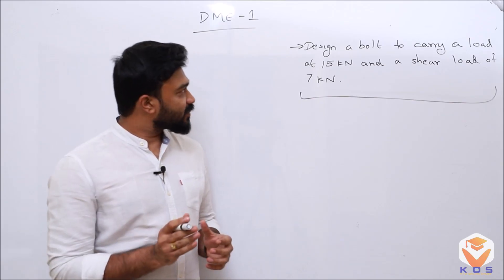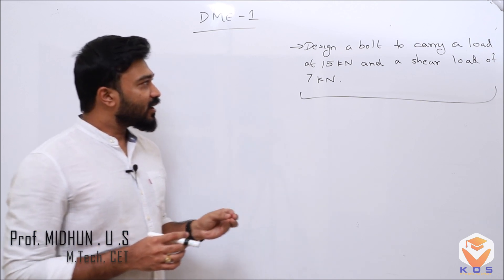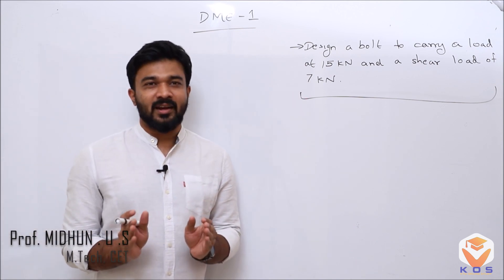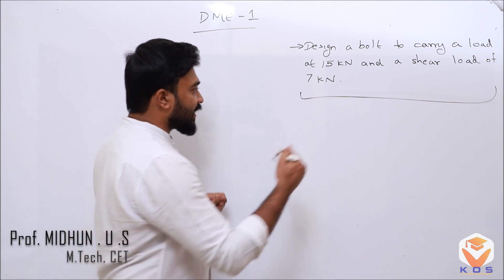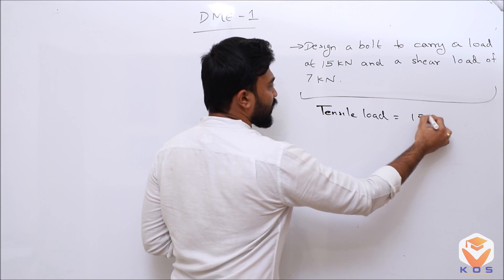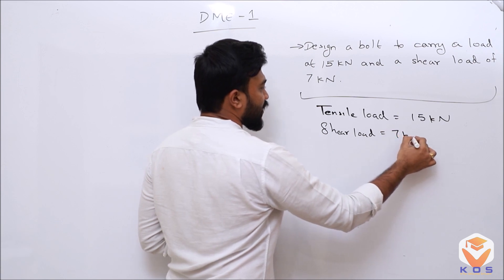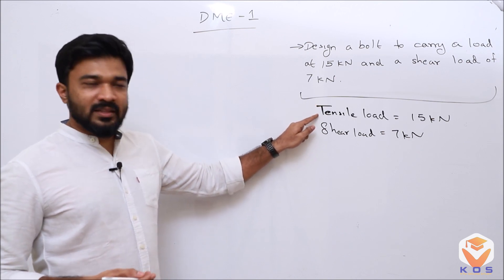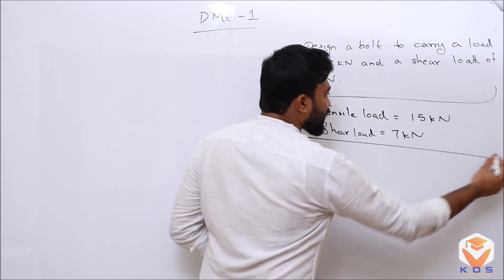The theories of failure are the first problem. In this question, design a bolt to carry a load of 15 kN and a shear load of 7 kN. For these two data: one is a tensile load of 15 kN and a shear load of 7 kN. By seeing the units, we will analyze the theories of failure.